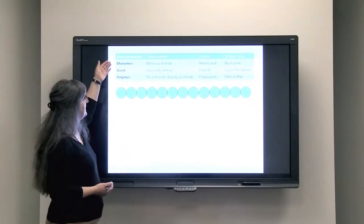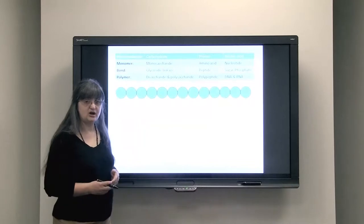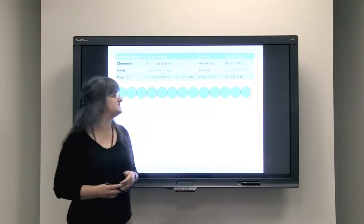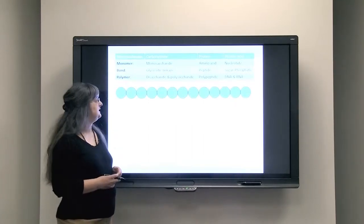For carbohydrates, monomers are monosaccharides. For proteins, monomers are amino acids. And for nucleic acids, the monomer is nucleotide.